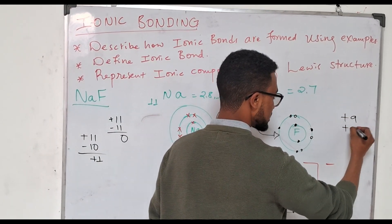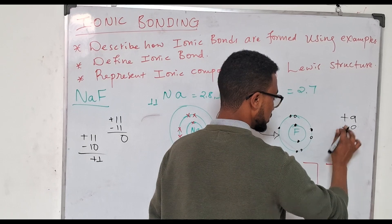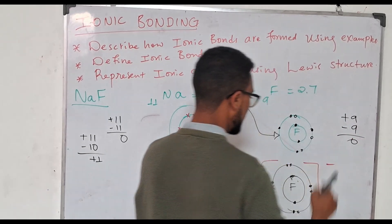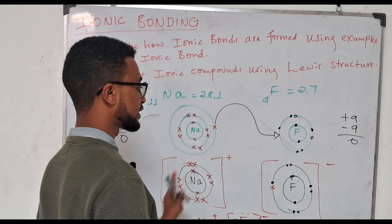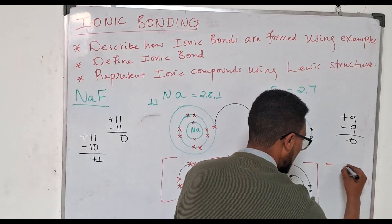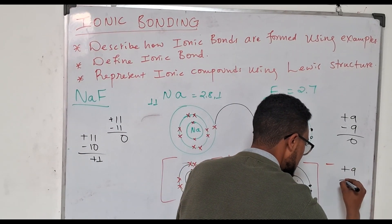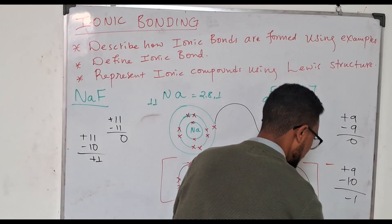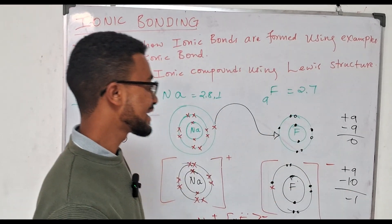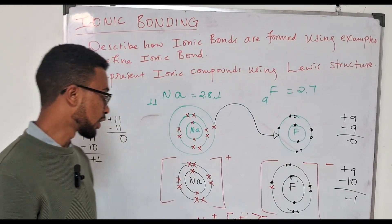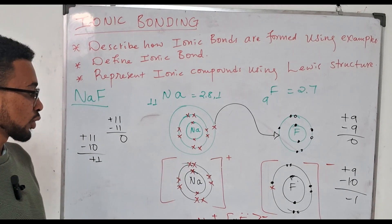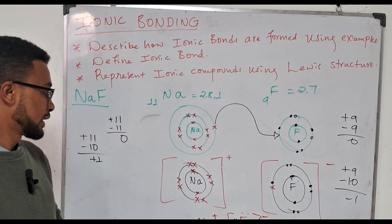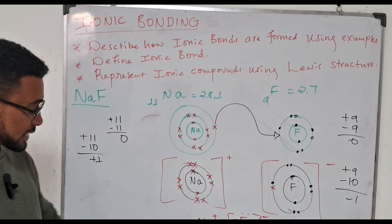For fluorine, it originally had 9 protons and 9 electrons, so the charge was zero. After gaining one electron, fluorine has 9 protons and 10 electrons. Nine minus ten is negative one, which is why fluorine has a negative one charge. This is how an ionic bond is formed.